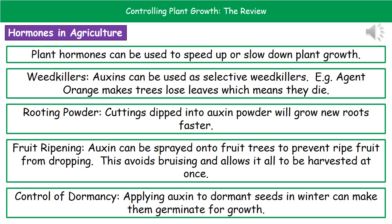The last application is controlling dormancy. Seeds are normally dormant because plants won't grow through winter, producing seeds to survive that dormant period. When farming in a greenhouse through winter, we may want to grow plants that normally grow in summer. To break that dormancy, we apply auxin to the seeds, causing them to germinate so we can grow them even in winter.